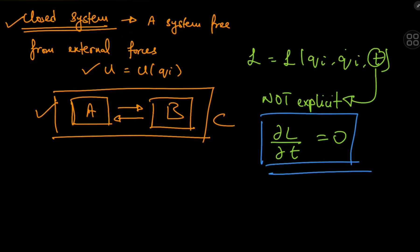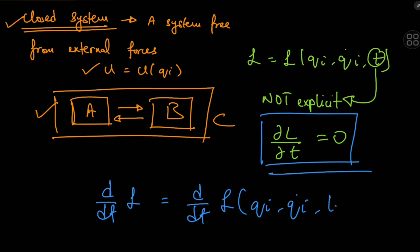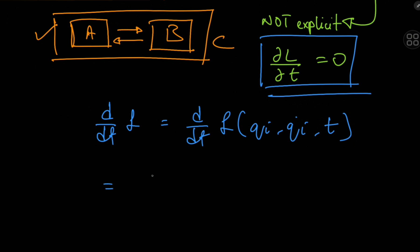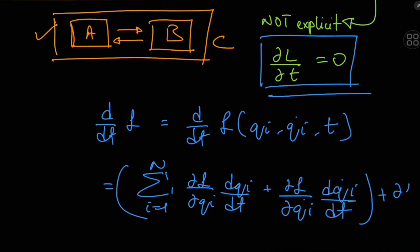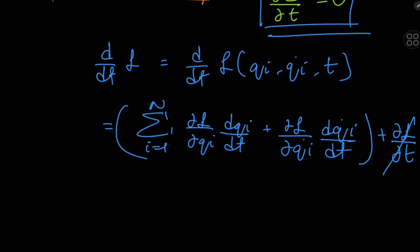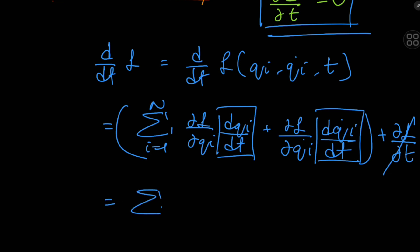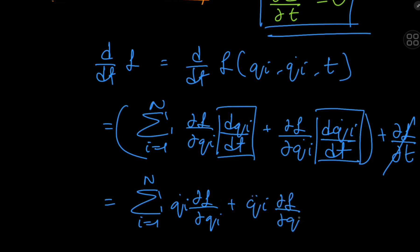This seemingly harmless equation has drastic consequences. We now look at the total time derivative of the Lagrangian. Since L is a function of all the generalized coordinates, all the generalized velocities, and time implicitly, applying the chain rule gives the sum from i = 1 to n of (∂L/∂qᵢ)(dqᵢ/dt) + (∂L/∂q̇ᵢ)(dq̇ᵢ/dt), plus the explicit time term which is zero. The dqᵢ/dt term is just the generalized velocity q̇ᵢ, and dq̇ᵢ/dt is the generalized acceleration q̈ᵢ.